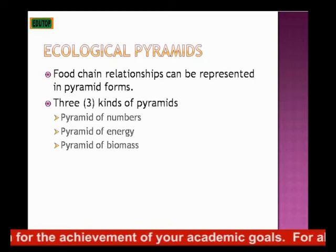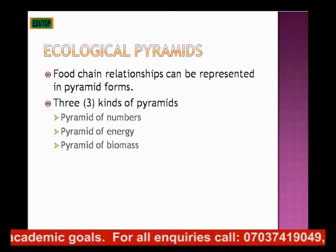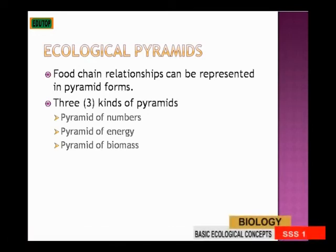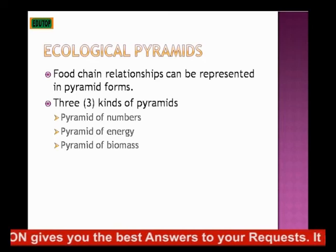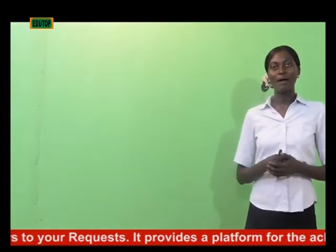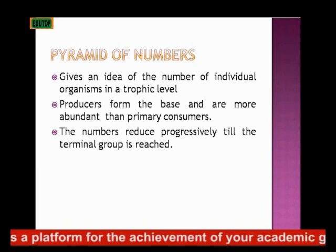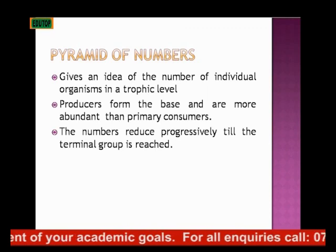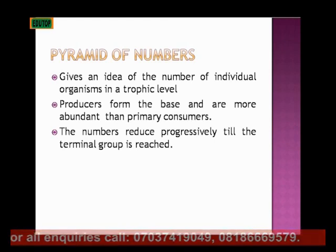We have three kinds of pyramid: the pyramid of numbers, the pyramid of energy, and the pyramid of biomass. Based on number, you have pyramid of numbers. Based on dry weight, you have pyramid of biomass. Based on energy, you have the energy pyramid. The pyramid of numbers gives an idea of the number of individuals at each trophic level — for example, showing that 50 goats feed on 1,000 water leaves.